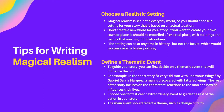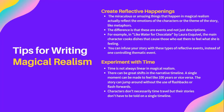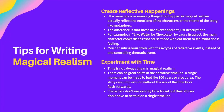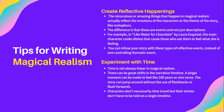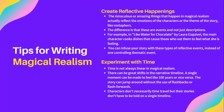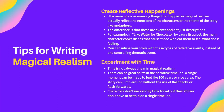You should also create reflective happenings. Many times the miraculous or amazing things that happen in magical realism reflect the emotions of the characters or the theme of the story, like metaphors — the difference being that these are events and not just descriptions. For example, in Like Water for Chocolate by Laura Esquivel, the main character cooks dishes that cause those who eat them to feel what she's feeling. So if she's feeling amorous when she cooks, they soon begin feeling amorous as well. You can infuse your story with these types of reflective events instead of one controlling thematic event.